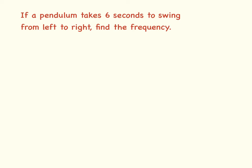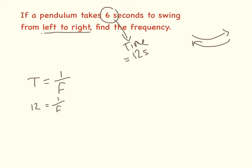So the first thing in this question you need to pick up is that we're only swinging from left to right in the 6 seconds. And your time period for a pendulum is from one side and back again. So time actually equals 12 seconds. So time equals 1 over frequency, meaning 12 equals 1 over the frequency.